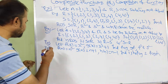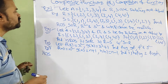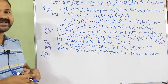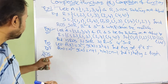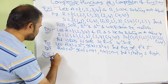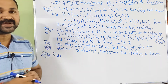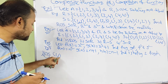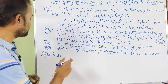Let us see the first one, that is R∘S. R∘S means it maps from S to R. So we have to select an ordered pair from S. Let us select (1,1). Now we have to select a pair from R which begins with 1, because (1,1) is ending with 1.